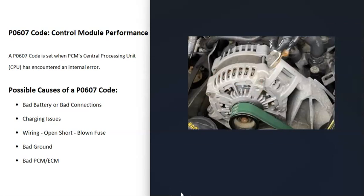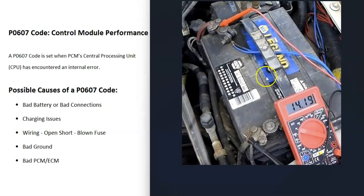The next thing that could cause this is some kind of charging issue, and this is mainly going to have to do with the alternator. You can check the alternator output with a multimeter — just check the voltage at the battery with the vehicle running and see what the output is. It should be somewhere between 13.5 and 14.5 volts. If it's lower or higher than this, there's some kind of issue with the alternator and it's not charging correctly.